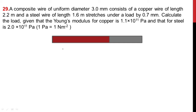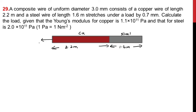You can look at the diagram here — there is a composite wire, one is the copper and the other is the steel. Copper length is 2.2 meter, steel length is 1.6 meter. When a force F is applied on the copper wire, the same force acts on the steel wire also. The net extension is δL = 7×10⁻⁴ meter.